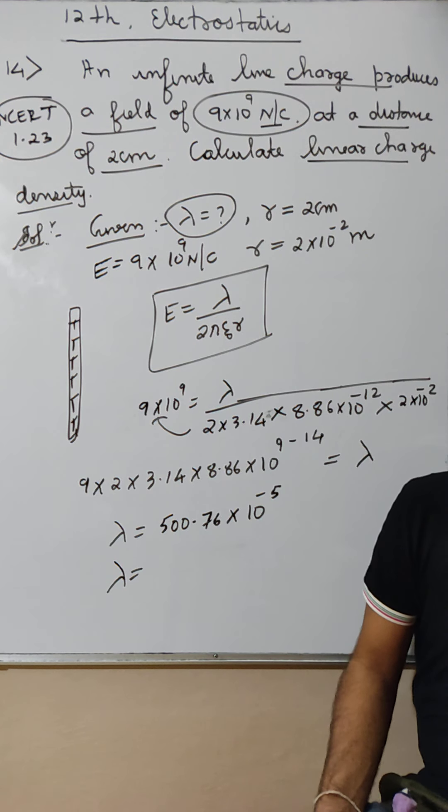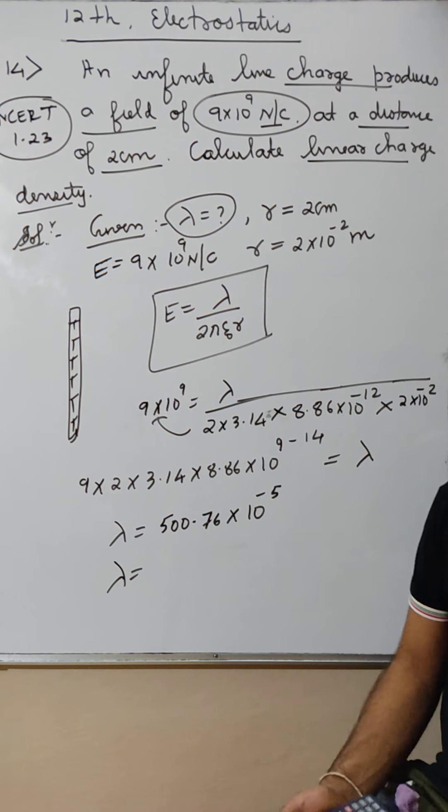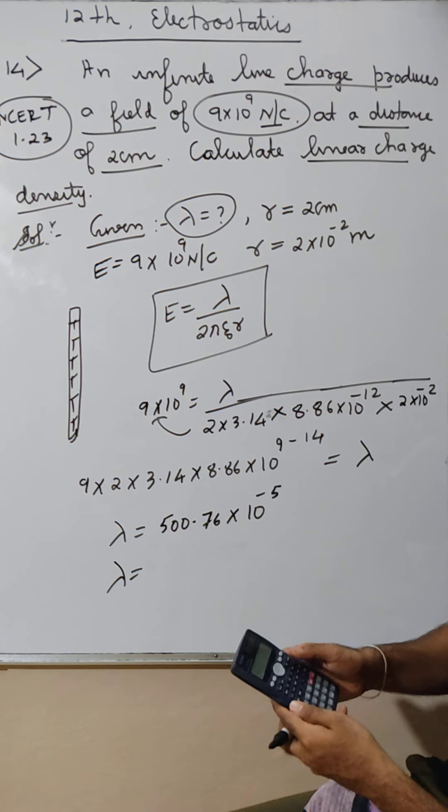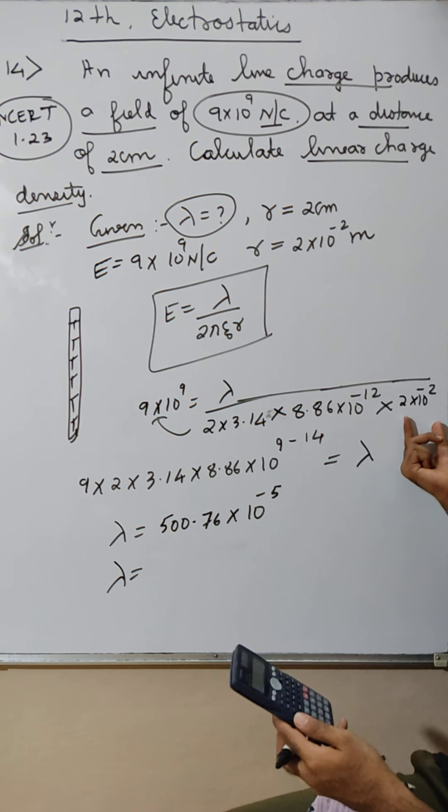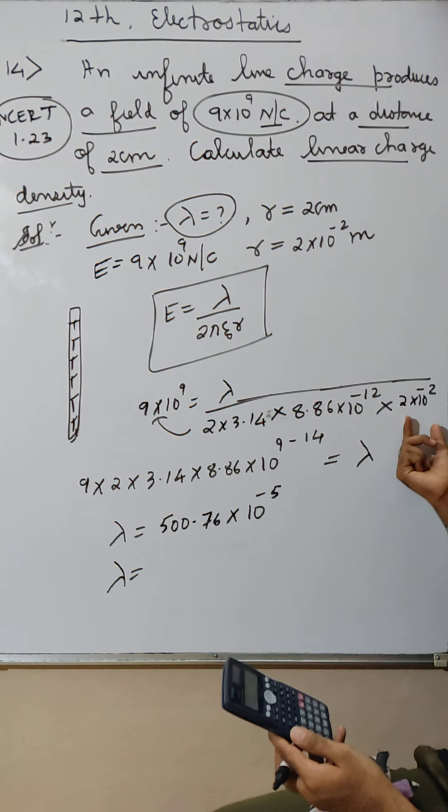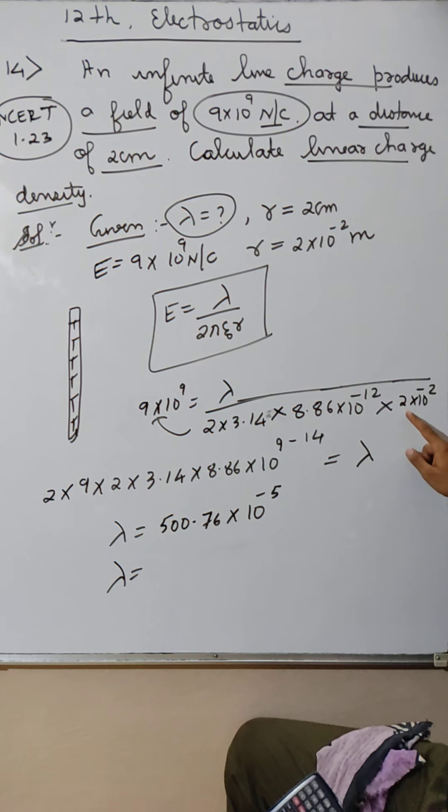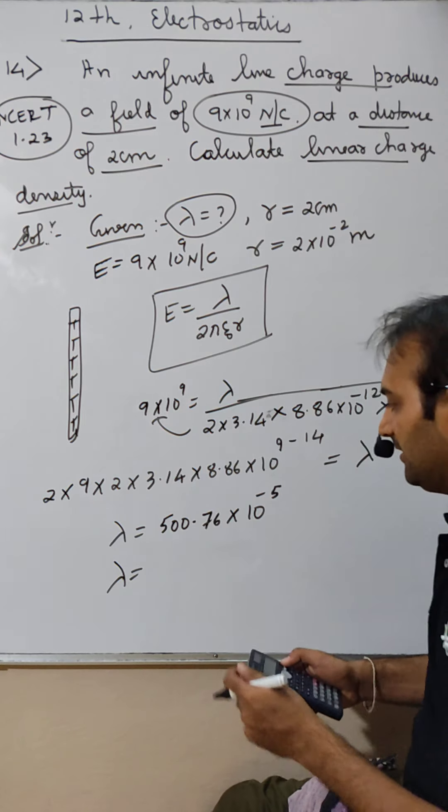9 into 2 into 3.14 into 8.86. I told you the rule is to keep answer in first decimal. Did I make any mistake?